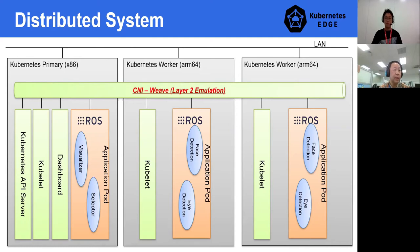The key point we want to mention here is that we need to use WaveNet CNI. This is needed if the application layer uses multicast. Since ROS supports distributed systems, it does endpoint discovery at runtime with multicast. We have tried a few other CNIs, but WaveNet will work out of the box when we use ROS.